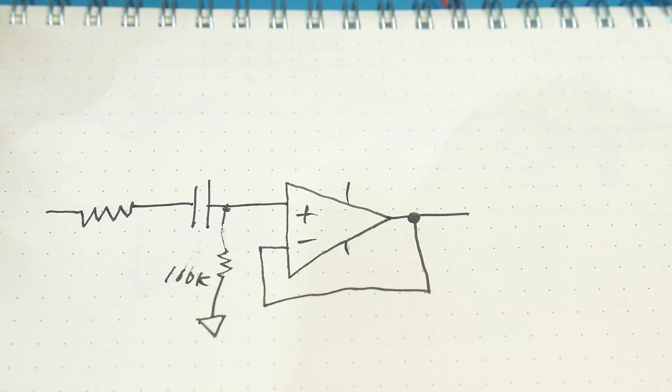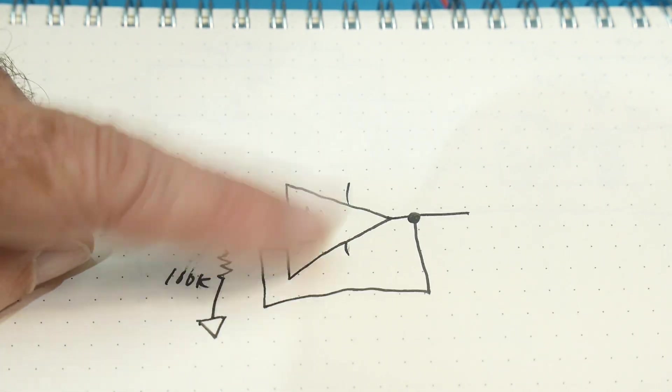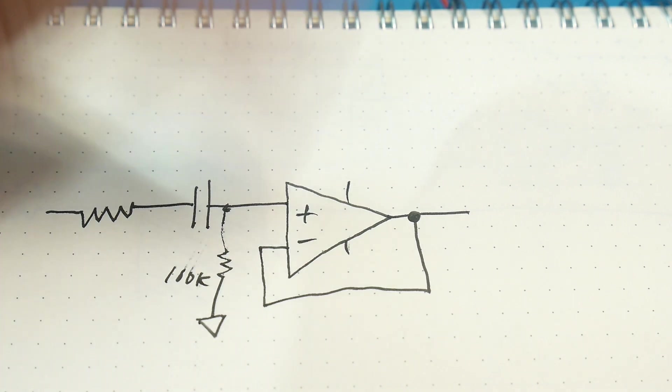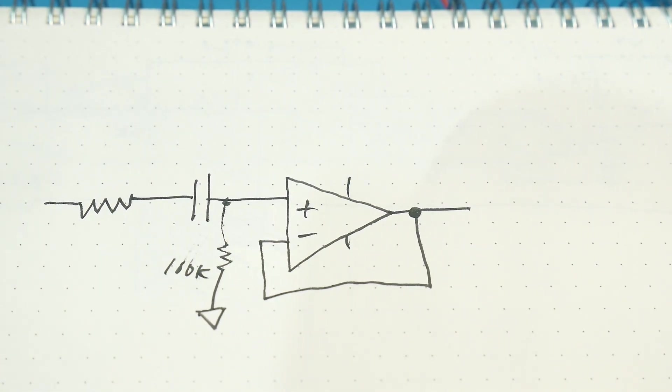And so we need this 100k here just to bias the input. It doesn't really have anything to do with the gyrator itself. It's just biasing this op amp to make it happy. So let's hook this up and take a look at what's going on.